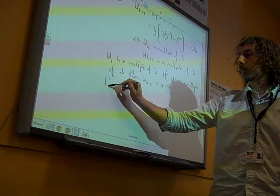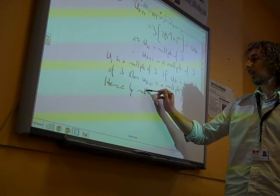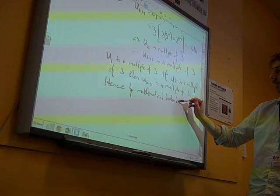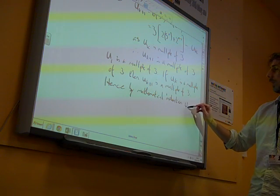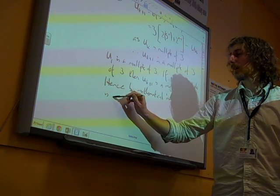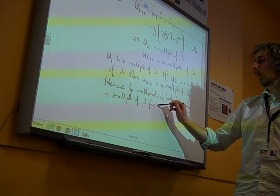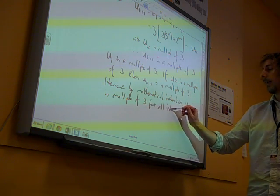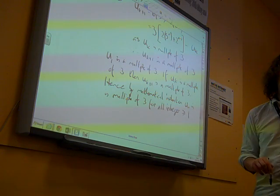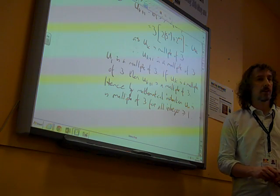u1 is a multiple of 3 for all integer n greater than or equal to 1. And we show that it was true for 1. So it must be for all greater than 1. And that's it.